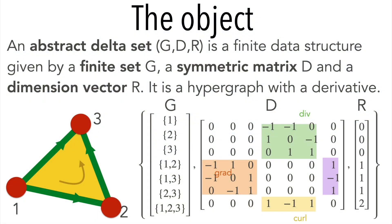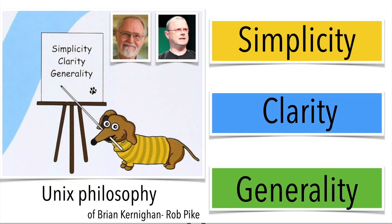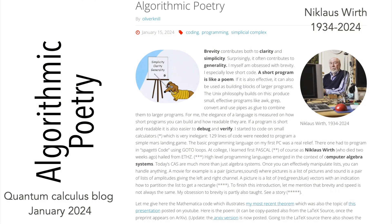The main object of this talk is a delta set. It is a hypergraph with a notion of derivative and dimension. It is not only simple but also clear and general, analog to the UNIX mantra. I myself like brevity. It allows to write programs like a poet.